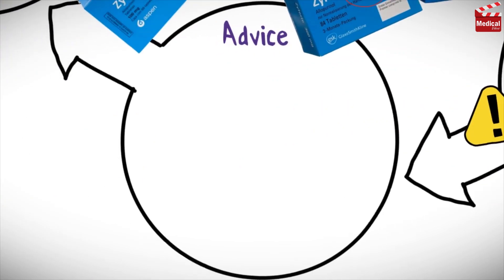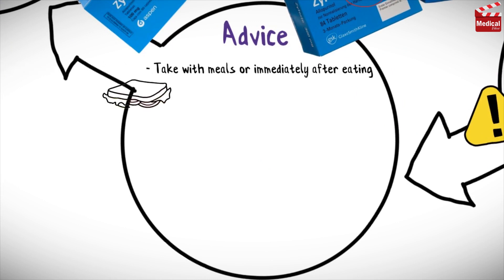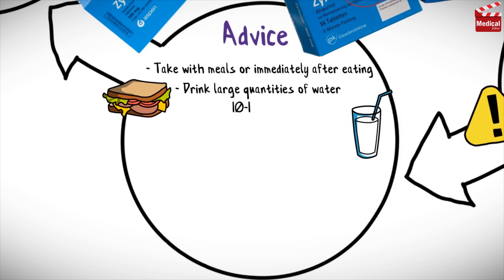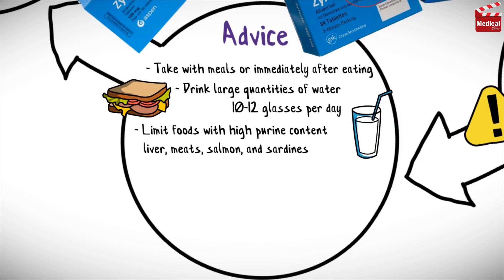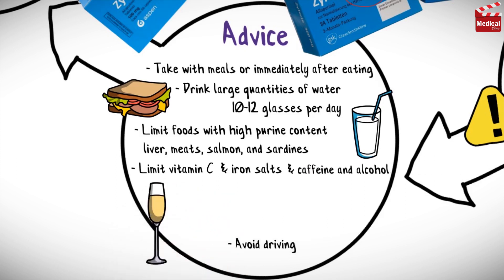Some advice to patients taking allopurinol: take with meals or immediately after eating; drink large quantities of water, about 10 to 12 glasses per day; limit foods with high purine content such as liver or other organ meats, salmon, and sardines; don't take large amounts of vitamin C; and don't take iron salts while taking allopurinol.